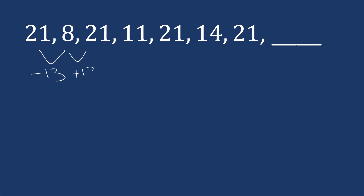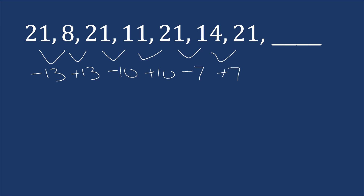Now looking at this pattern: twenty-one, eight, twenty-one, eleven, twenty-one, fourteen, twenty-one. Going from twenty-one to eight is subtracting thirteen. Eight to twenty-one is adding thirteen. Twenty-one to eleven is subtracting ten. Eleven to twenty-one is adding ten. Twenty-one to fourteen is subtracting seven. Then fourteen to twenty-one is adding seven. So the subtracted amounts are thirteen, ten, seven — that's decreasing by three each time. So the next one would be minus four, which gives us seventeen.